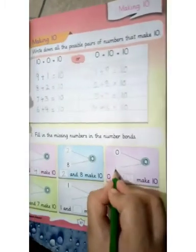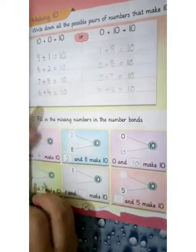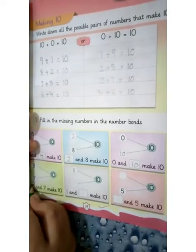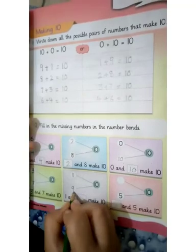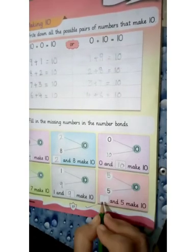0 and 10 make 10. 7. 7 and 3 make 10. Okay. 1 and 9 make 10. 5 and 5 make 10.